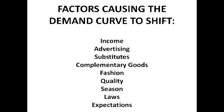A normal good is a good for which demand rises as incomes rise. So for normal goods, a rising income will cause a right shift in the demand curve, whilst a falling income will cause a left shift. An example of a good like this might be a camera.